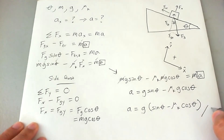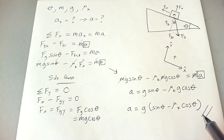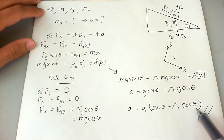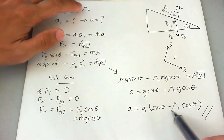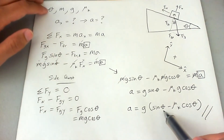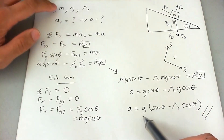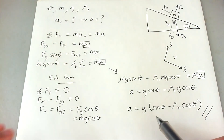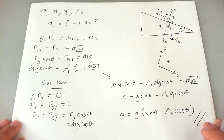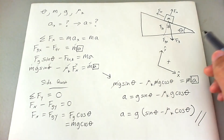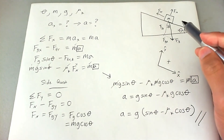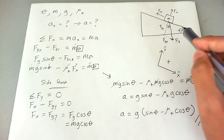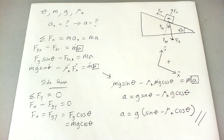Let's verify we have everything we need. Theta is given, mu-K is given, and G is given — we didn't even need the mass. So this is the acceleration that the block incurs while sliding down the ramp with a kinetic friction coefficient of mu-K.